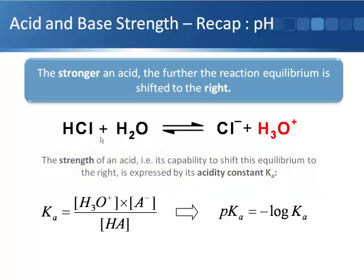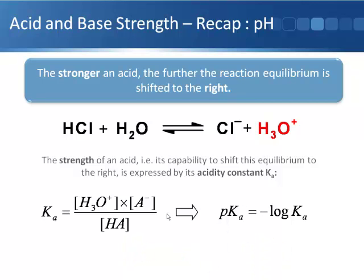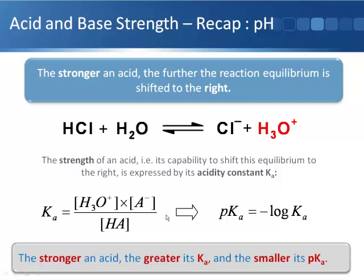So the stronger an acid, the more the equilibrium will lie to the right and therefore the larger the Ka will be and therefore the smaller the pKa will be because it's the negative log of Ka. And this is the way that we as organic chemists actually quantify the strength of an acid. The stronger an acid, the greater its Ka and therefore the smaller its pKa.